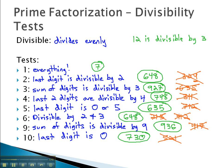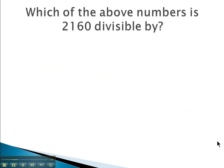Let's see if we can use these tests to decide if a certain number is divisible by something. Let's take, for example, the number 2160. Well, we know everything is divisible by one, so one clearly divides into it.